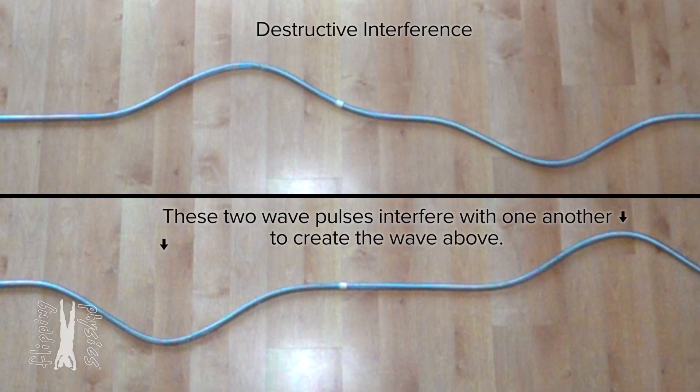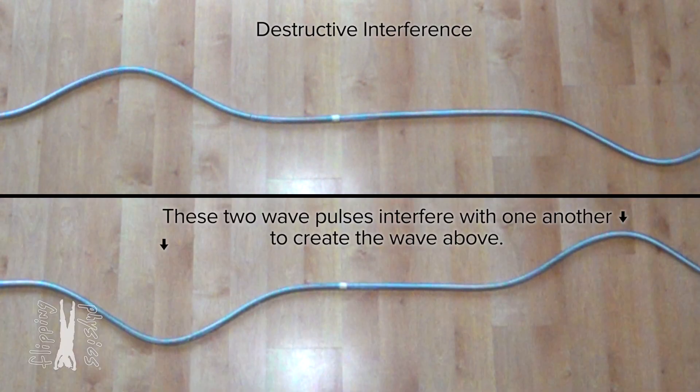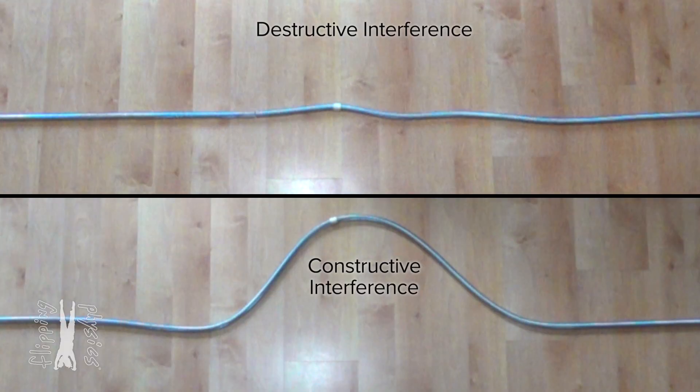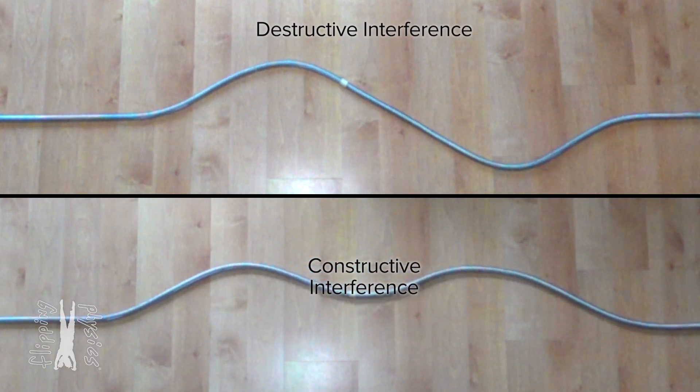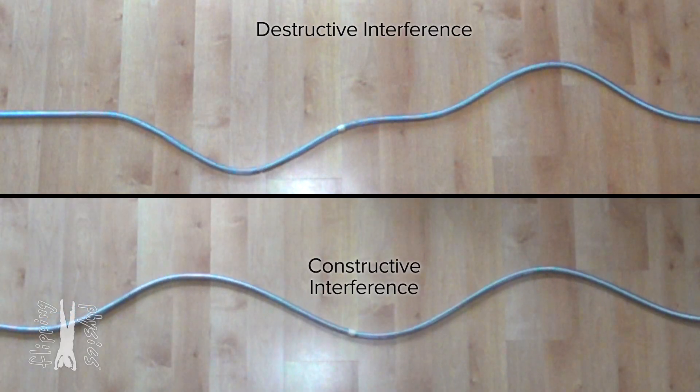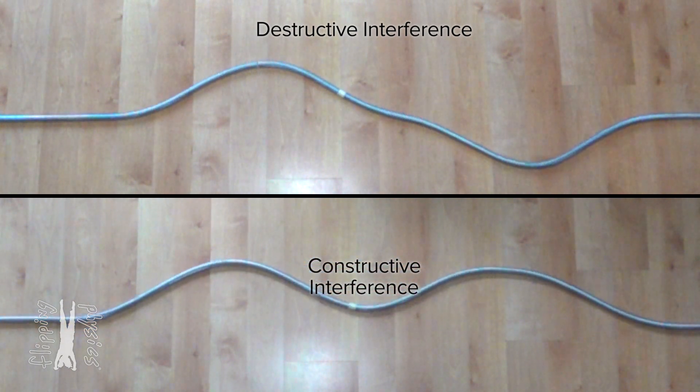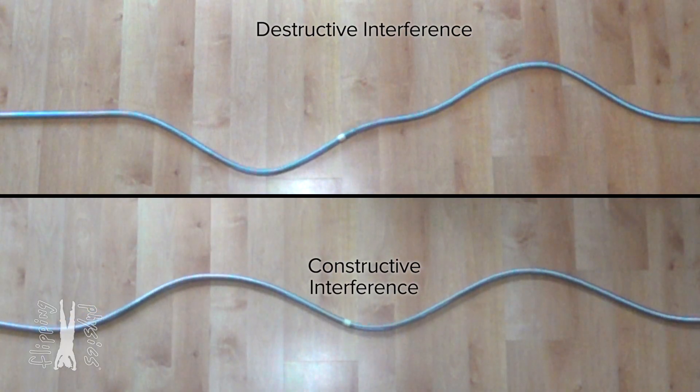Why? In the previous constructive example, the two waves added to one another constructing something bigger. In this example, the two waves seem to cancel one another out and they no longer construct something bigger, but rather they seem to destroy each other. So, I bet it's called destructive interference.